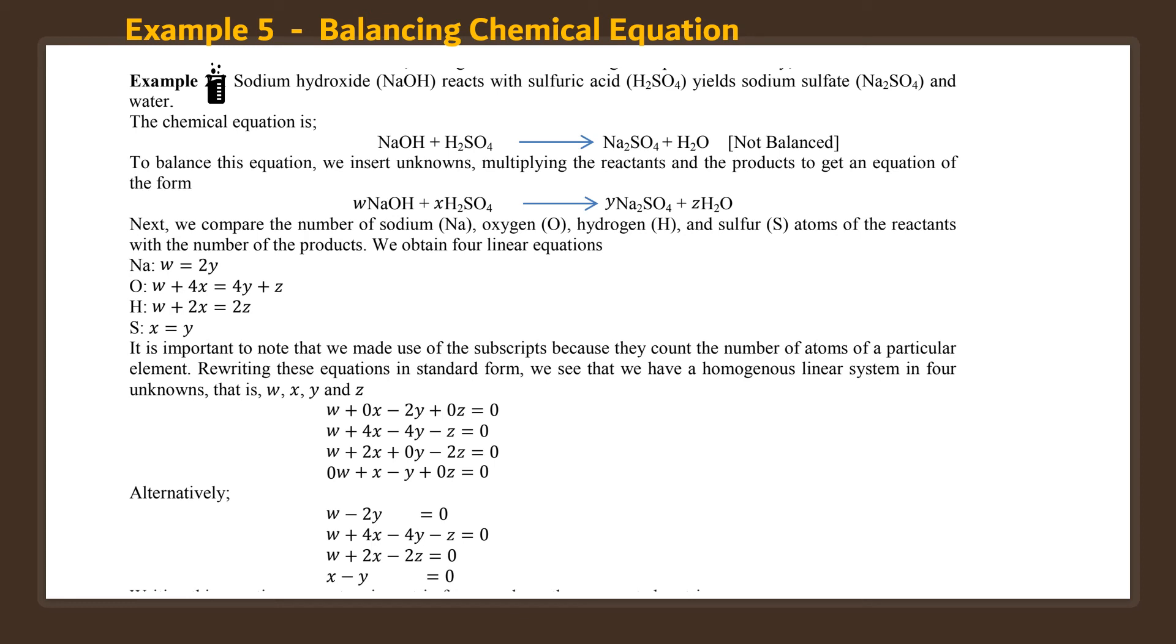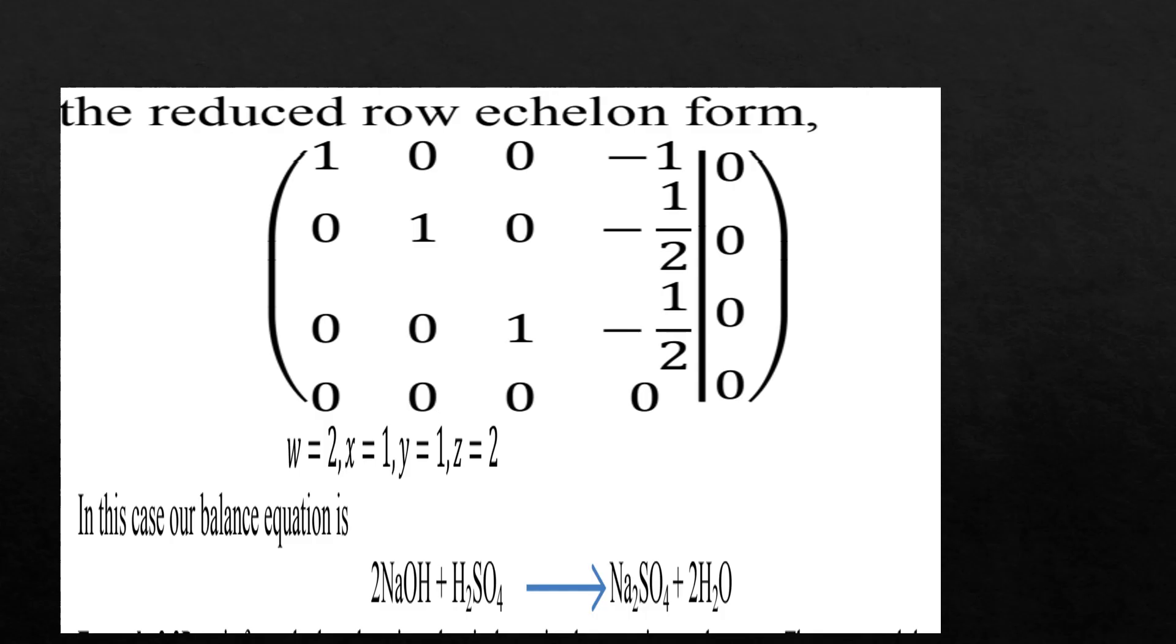And try to get the augmented matrix and make yourself the reduced row echelon form. You can find what the values of X, Y, Z, and W are. Once when we know the value for X, Y, Z, and W, we can substitute and compare, complete the balancing the equation.